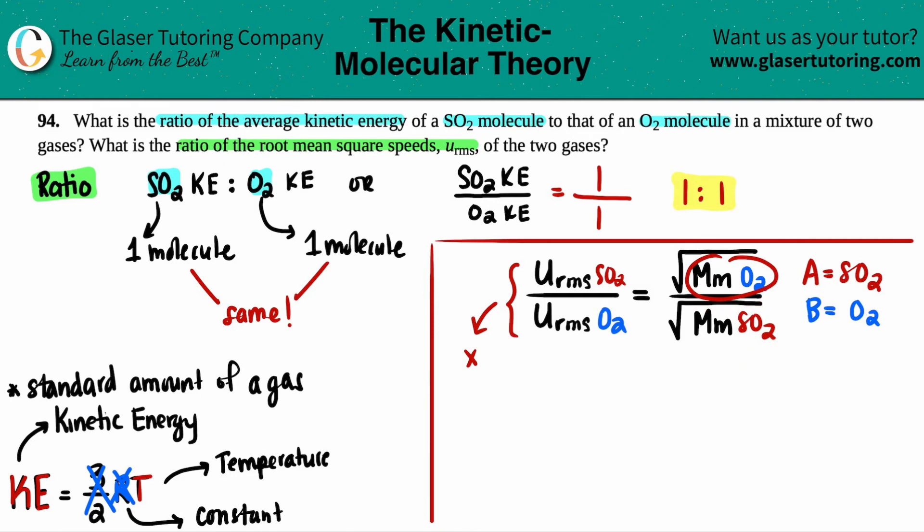Now we're looking for the ratio. Remember, I said a ratio could be in two forms. It could be that dot dot or it could be the division. And look here. There's the ratio between the root mean square speeds. So we're solving for this whole thing. This is what we're solving for. So maybe I could label that as X. All we have to do is just find out what the molar mass of O2 is and what the molar mass of SO2 is. So we need the calculator and we need periodic table.